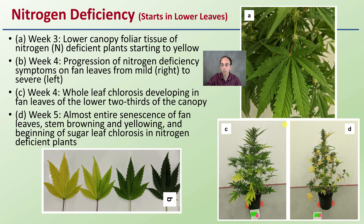At week four, we see the progression of nitrogen deficiency symptoms in the fan leaves from mild on the right to most severe on the left. We can see whole-leaf chlorosis developing in the fan leaves of the lower two-thirds of the plant canopy. By week five, there is almost entire senescence of fan leaves, stem browning and yellowing, and beginning of sugar leaf chlorosis in nitrogen-deficient plants — a really advanced form of yellowing.